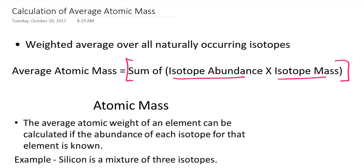The reason for this weighting is that not every isotope exists in the same amount in nature. Some isotopes are much more dominant — more frequently encountered — and should count more towards the average atomic mass. Others are barely present, only a very small fraction of a percent, and should count very little. Let me demonstrate how this calculation is done.